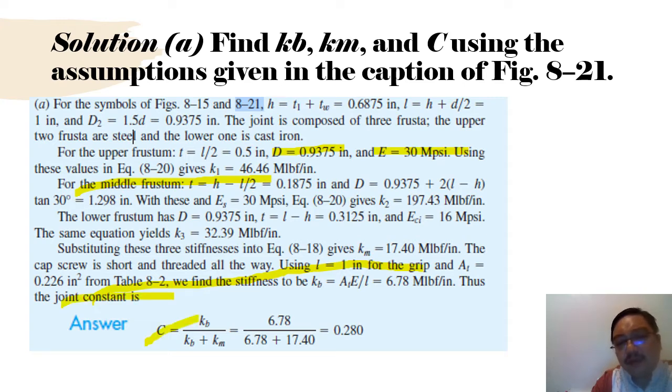C equals KB over KM and you get 0.28. This is the joint constant.